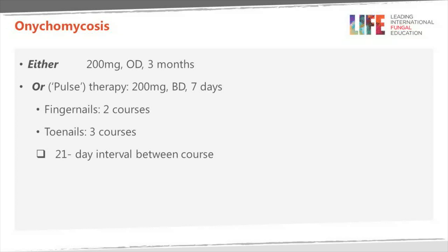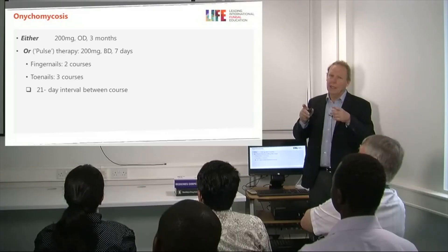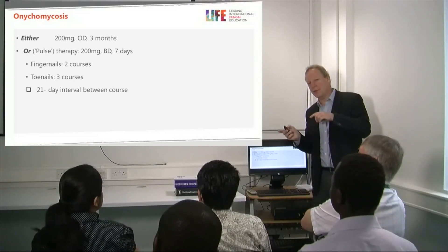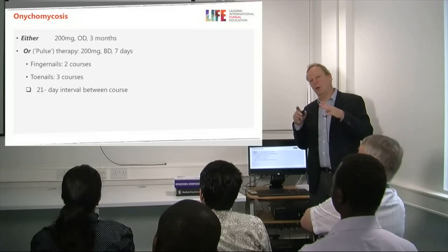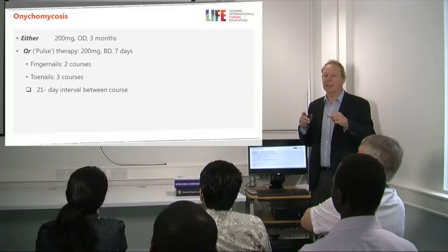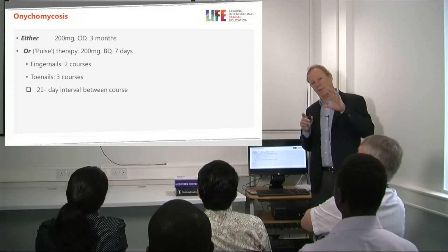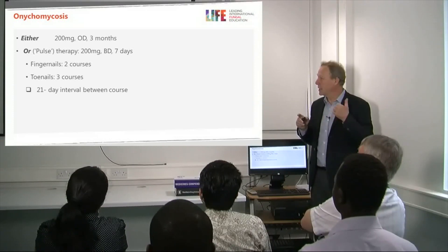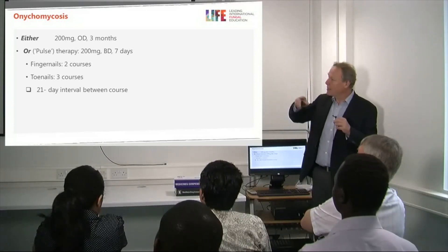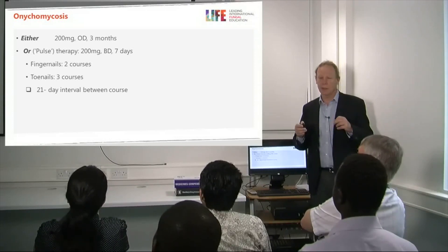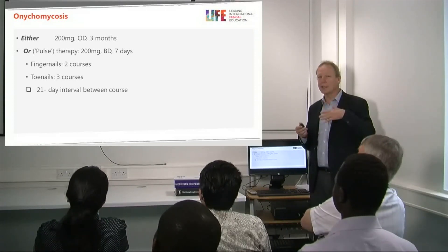For onychomycosis, you can either treat continuously for three months at 200 mg daily, or use pulse therapy: 200 mg twice a day for seven days, repeated for two courses for fingernails or three for toenails — though many doctors use a longer course for toenails. In non-dermatophyte toenail infections, itraconazole is valuable as it works for some other pathogens such as Aspergillus and Alternaria. Between pulse therapies, a 21-day interval is typical, designed to minimise toxicity.